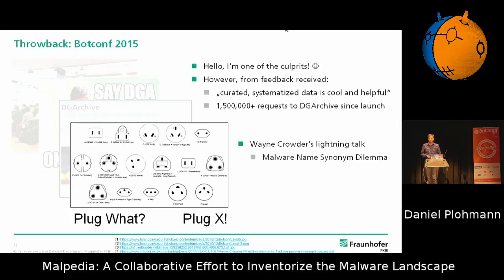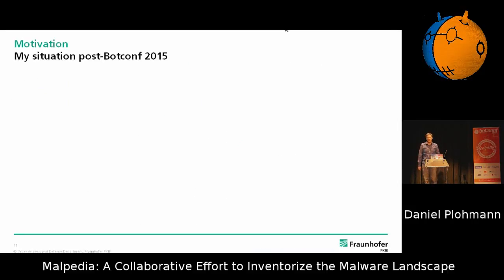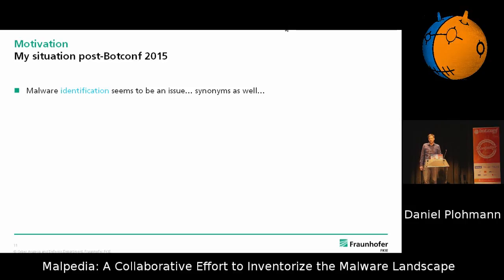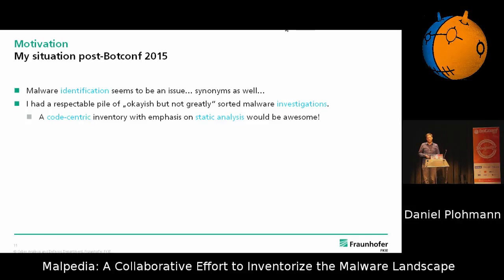I didn't really talk to him, but I thought it was a good idea, because when I came back from Botconf, I looked at all the data that I had. For several years I had basically the idea that I'm sitting on a pile of investigations — structured by date, with the sample, unpacked samples, maybe an IDB, some text and write-up — and what is somewhat structured is still a mess. It might be a good idea to do this in a way more structured fashion: a code-centric inventory focusing on static analysis, because we can basically resolve our synonym and naming problem with that — like a Rosetta Stone where you have pieces you can refer to and put a label on. Code is basically the basis that we can find consensus on when we try to name stuff.